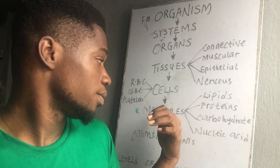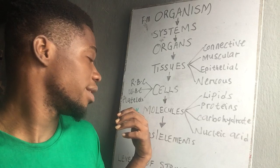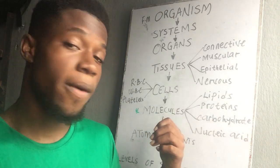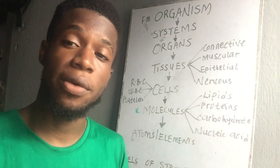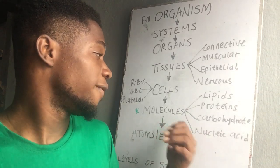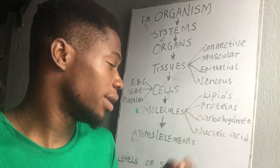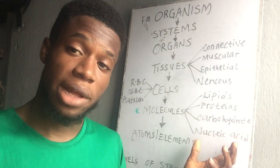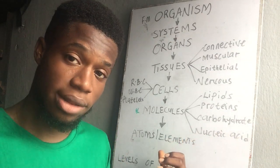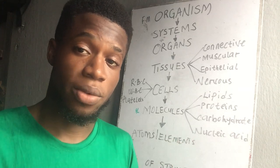Molecules make up cells. There are four main molecules — indicated here as our emphasis — called macromolecules or biomolecules. The four major molecules are: lipids, proteins, carbohydrates, and nucleic acids. These macromolecules are made up of elements or atoms, which we'll talk about in subsequent videos.